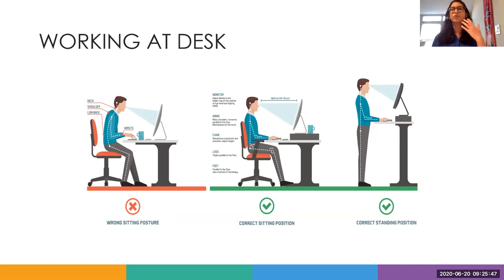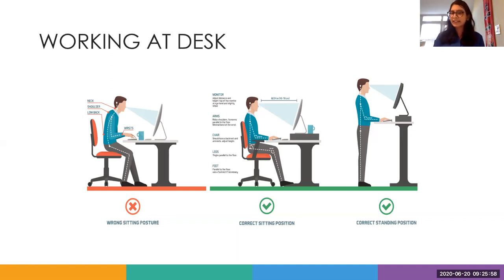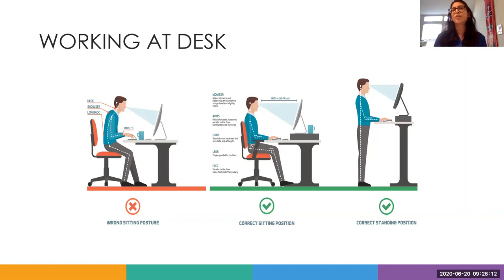For correct sitting posture: maintain a neutral neck, keep your screen at arm's length, keep your elbows at 90 degrees and your knees at 90 degrees or slightly more. It's not possible to hold perfect 90-degree posture indefinitely, but at least every 20 to 30 minutes, change your posture, get into that correct position, do a tummy tuck, sit straight, and concentrate on giving your body correct posture.